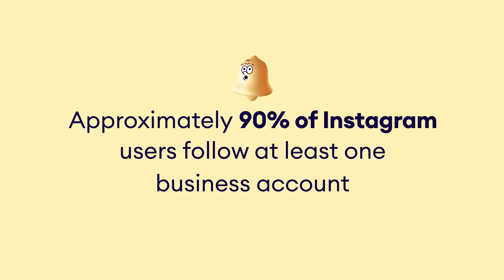Social media is a huge part of our lives these days and Instagram has become one of the most popular platforms, not just for individuals but also for businesses. Did you know that approximately 90% of Instagram users follow at least one business account? This shows that people actively seek to engage with brands they love on Instagram. So if your business isn't on Instagram, it's time to join, and the best way to convert those Instagram followers into sales is by linking your Instagram account to Como.